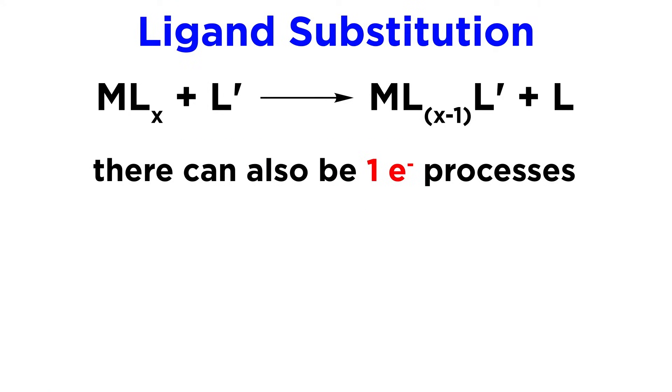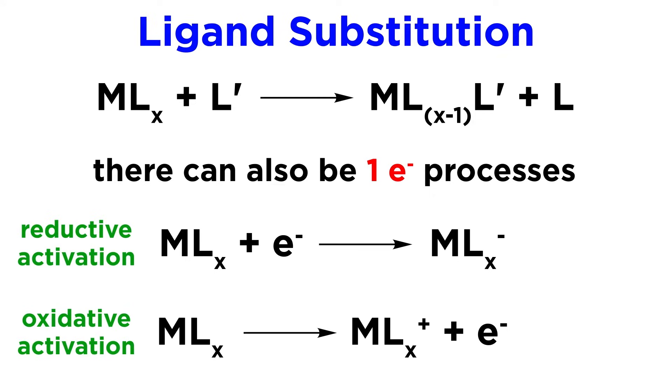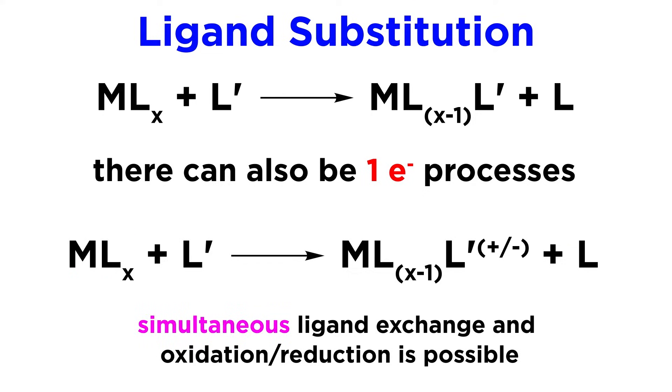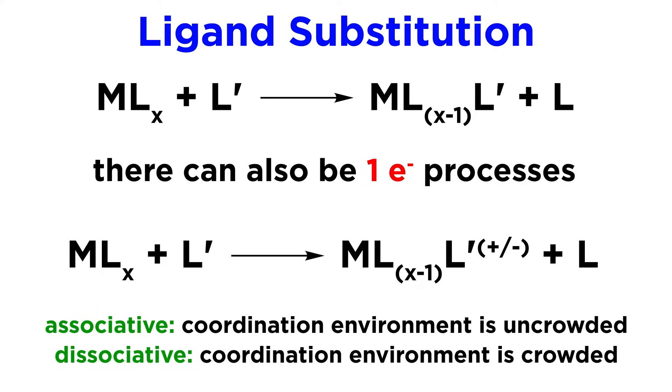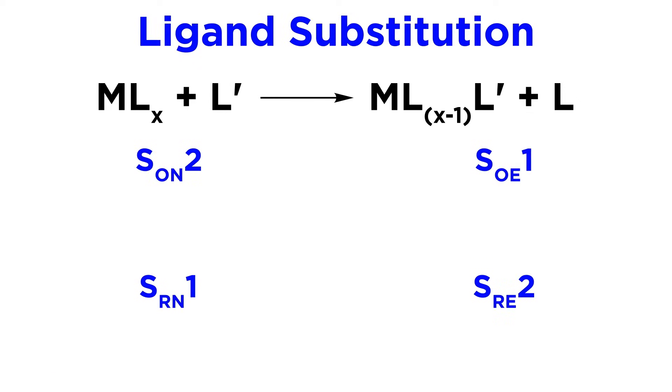In addition, there can be one-electron processes. Activation can occur by way of oxidation or reduction, where the complex can either gain or lose one electron, thus priming it for ligand exchange. If the LUMO is nonbonding or modestly antibonding, reduction is likely, while if the HOMO is nonbonding, oxidation is likely. The gain or loss of an electron can also occur simultaneously to ligand exchange, whether associative if the coordination environment is uncrowded, or dissociative if the coordination environment is crowded. When we combine these concepts, we can identify four common pathways.